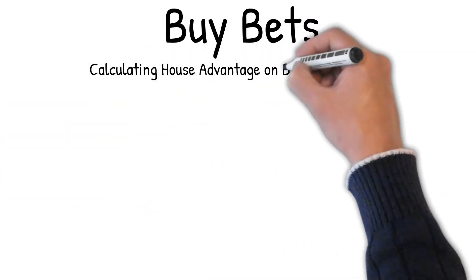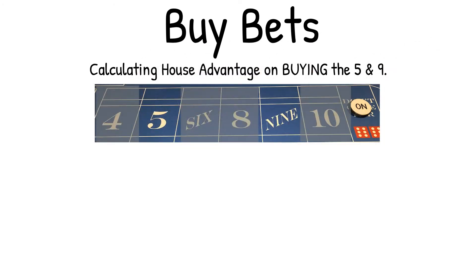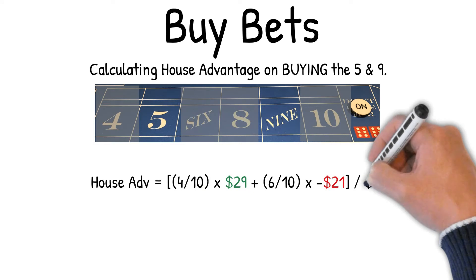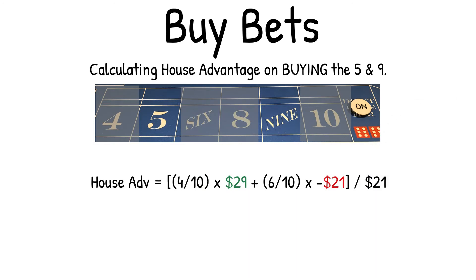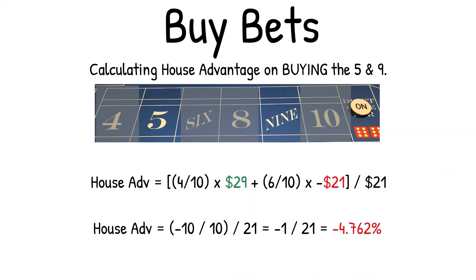Calculating house advantage on buying the five and nine. House advantage equals: 4/10 × $29 + 6/10 × (−$21), over $21. This equals (−10/10) / 21, which equals −1/21, which equals −4.762% house advantage.